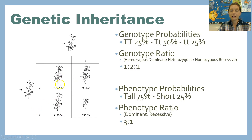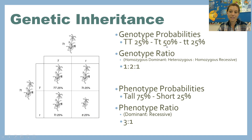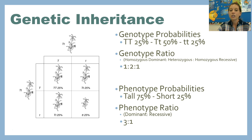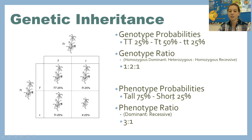Here's what you end up with: TT would be tall, Tt would be tall, Tt would be tall, and tt would be short. So you'd expect 25% TT, 50% Tt, and 25% tt. Remember, this is just probability — what you think is going to happen, not necessarily what will happen. The genotype ratio is written as 1:2:1. The phenotype probability: 75% tall and 25% short, so the phenotype ratio is 3:1. This is your F1 generation cross — this is why you ended up with 75% and 25%.